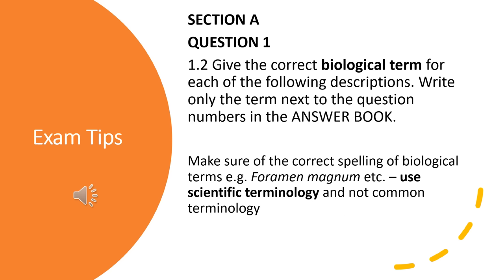Another type of question from Section A is terminology, where you have to give the correct biological term for a specific description or statement. Make sure of the correct spelling of the biological terms, and very importantly, use the scientific terminology and not common names.